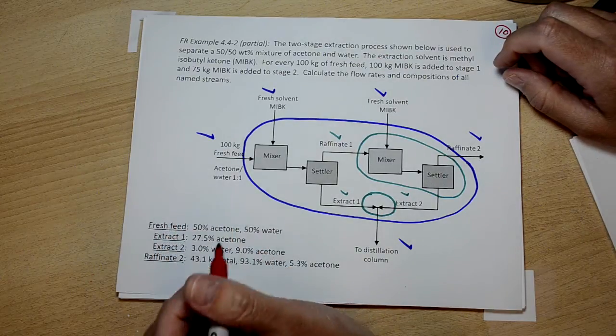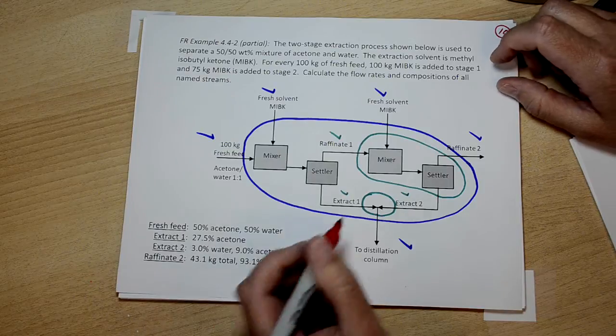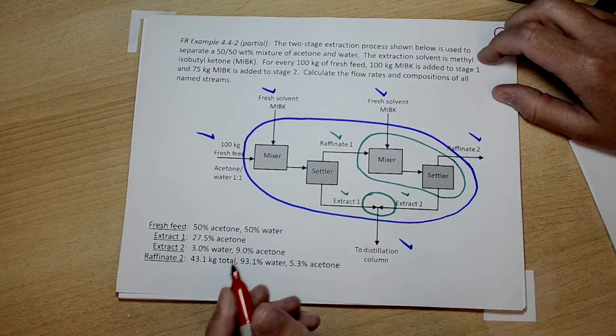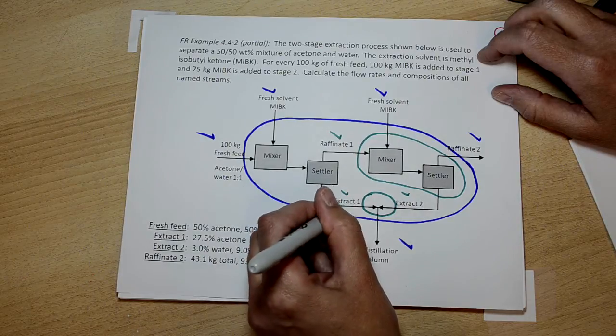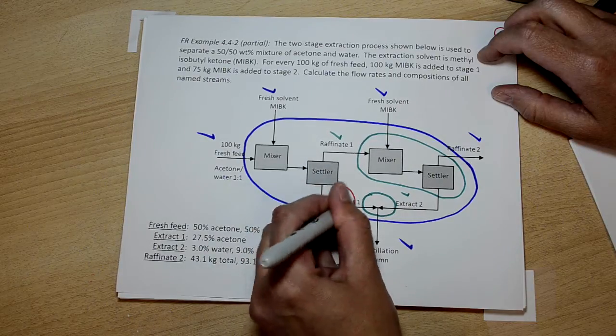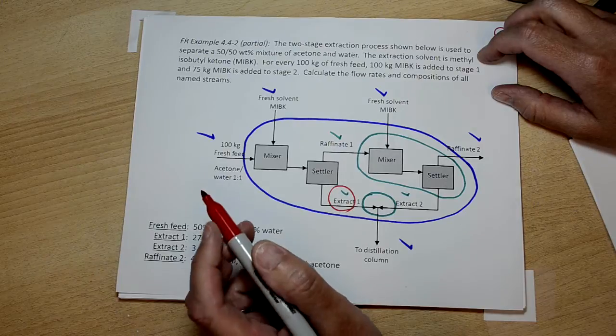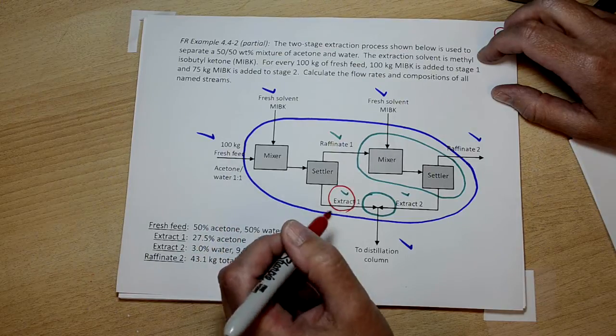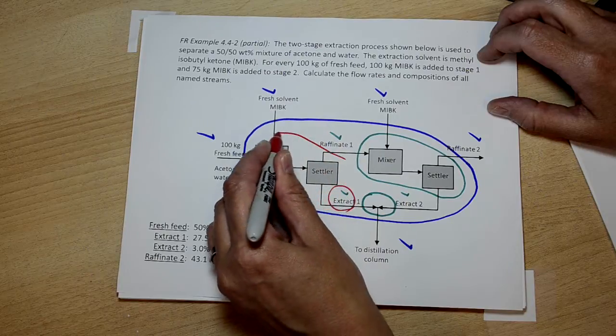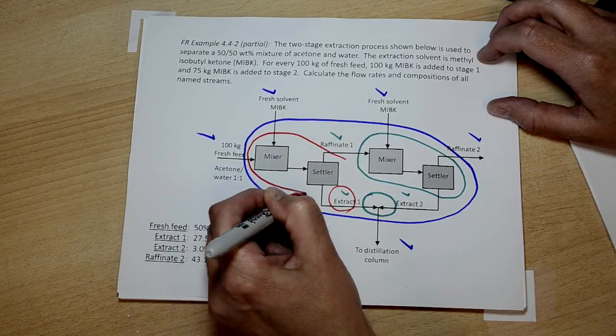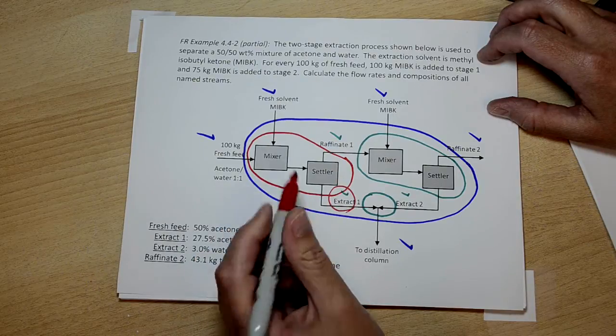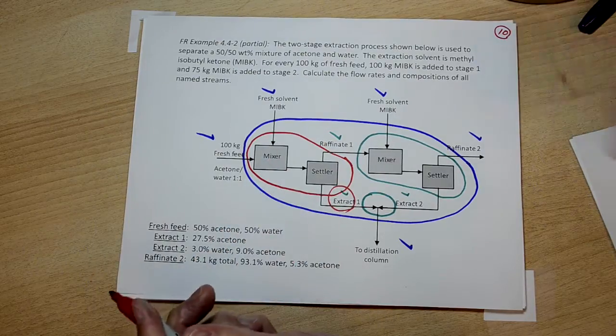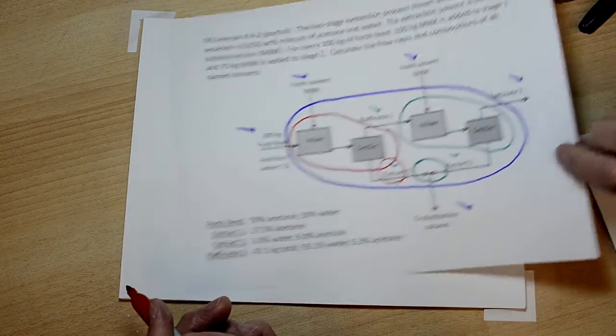What remains are some compositions in the extract stream. No, that's not true. Yeah, in extract one stream. We still don't know the complete composition of this extract one stream, and those last few bits of information we can obtain by doing balances on stage one. So this extract one stream is the problem, and we're going to do balances on stage one in order to get the few remaining compositions.